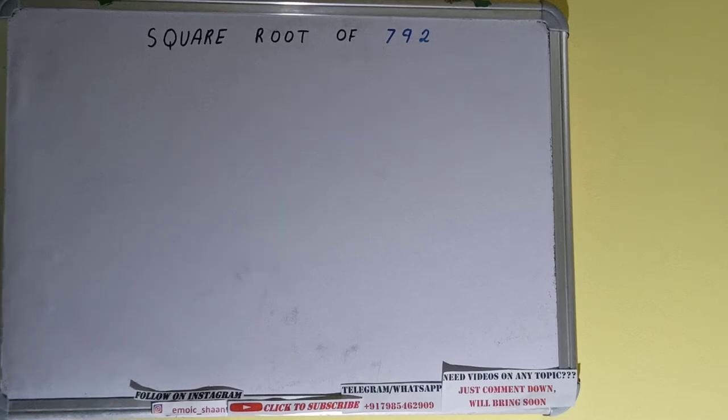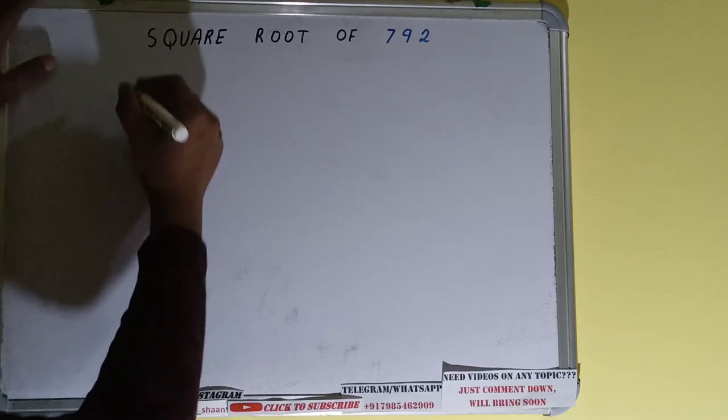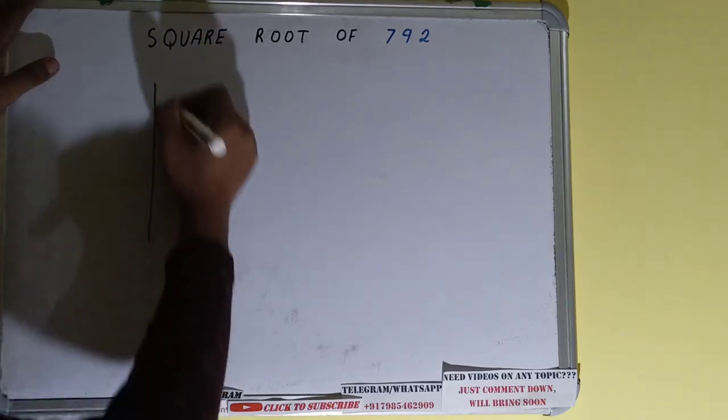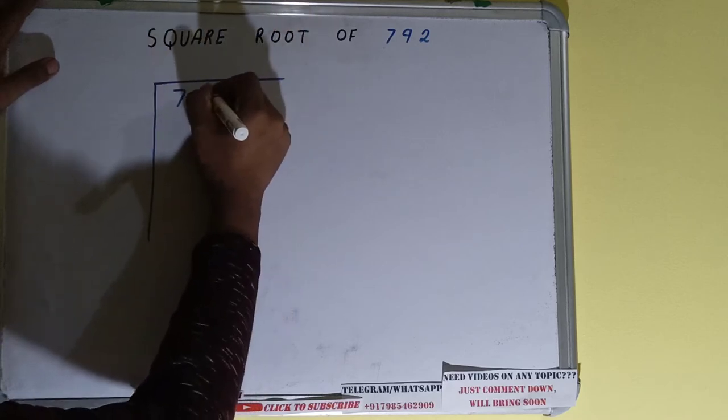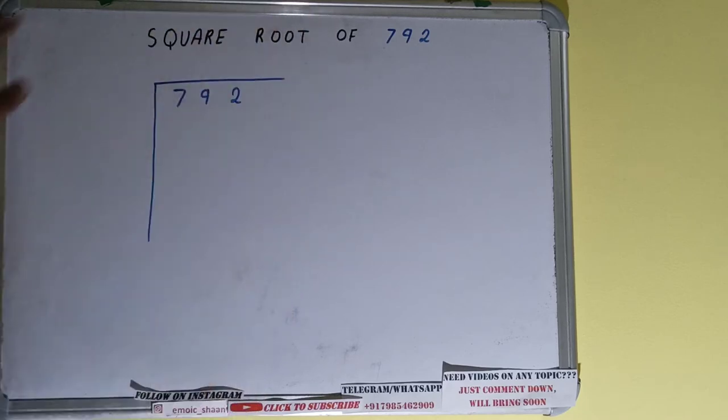Hello friends, and in this video I'll be helping you find the square root of the number 792. So let's start. We'll be using the division method, so first we need to write the number like this.